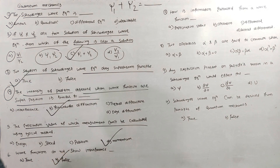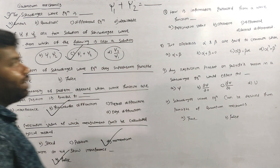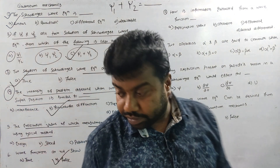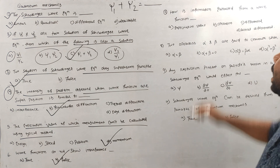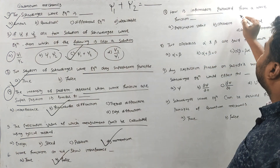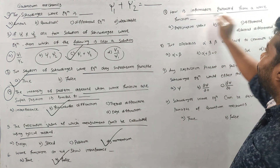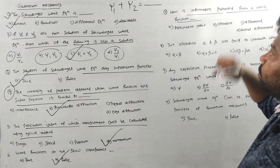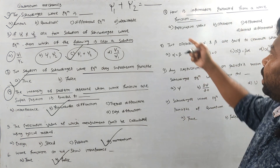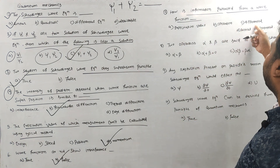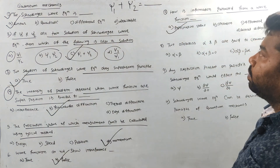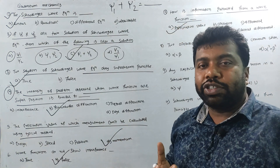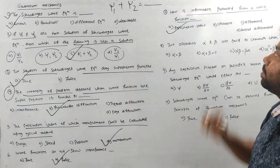The wave function does show interference — false. How is information extracted from the wave function? The options are: expectation value, operator, diffraction, or partial differentiation. We can calculate information from the wave function using the expectation value.